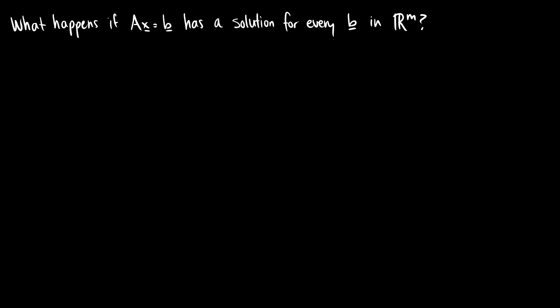So this means that no matter what b you take, you can get A1 times V1 plus A2 times V2, all the way up to An times Vn. So if this is the case, then the span is going to be all of R^m.